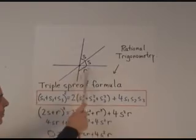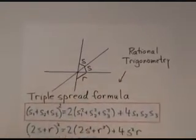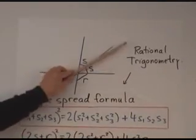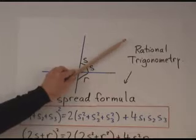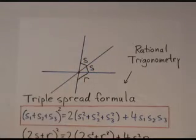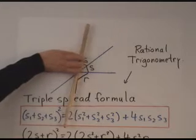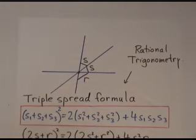Now for us, what's going to be interesting is what happens when two of those spreads are the same. So we imagine that this spread, s, is the same as this spread. And then we're interested in, well, what's the spread between the first and the third line? We'll call that r.